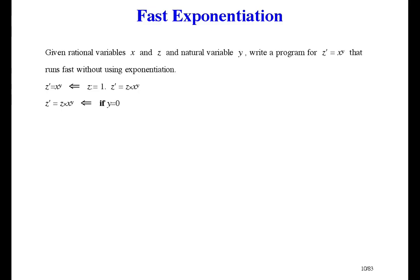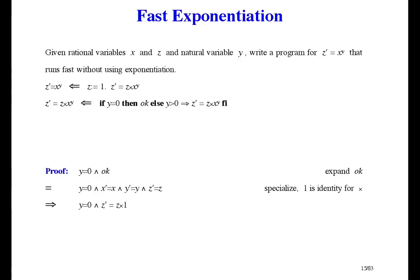If Y equals 0 then X to the Y is 1, so we just want Z prime equal Z. The proof of the first case goes like this: expand, then get rid of the two conjuncts that aren't helping — that's specialization, making an implication on the left margin. Then throw in a times 1, which doesn't change anything. Change the 1 into X to the power 0, then use the context Y equals 0 to change the 0 into Y, and throw away Y equals 0.